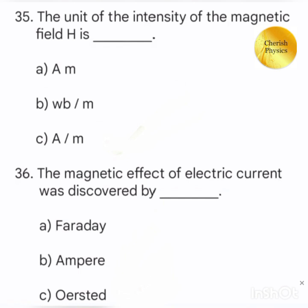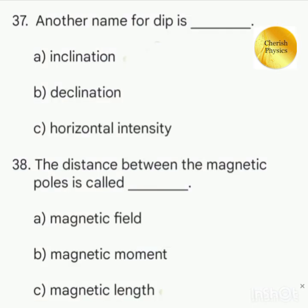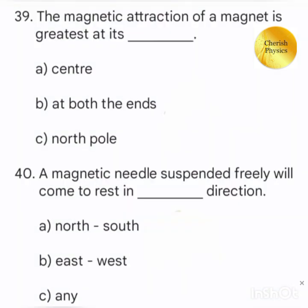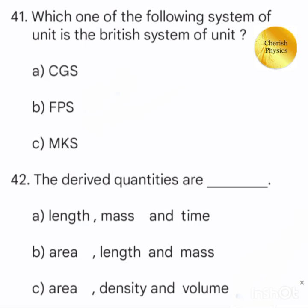The magnetic effect of electric current was discovered by. Another name for dip is. The magnetic force is called. The magnetic attraction of a magnet is greatest at its. A magnetic needle suspended freely will come to rest in which direction.